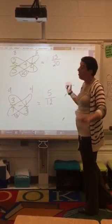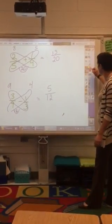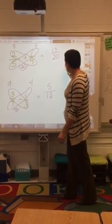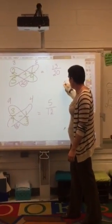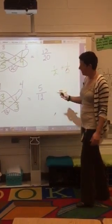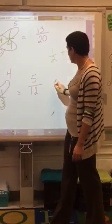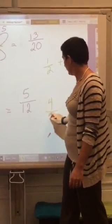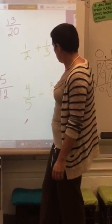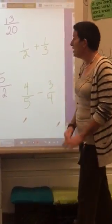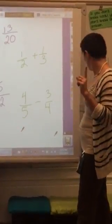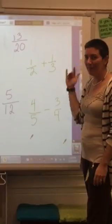All right, guys. For you at home, here's your extra credit due. First thing when you come in on Wednesday, I would like for you to add 1 half plus 1 third. And then I would like for you to subtract 4 fifths minus 3 fourths. On loose leaf with your name for extra credit on Wednesday. Have fun tomorrow. Don't forget your homework. And we will see you bright and early. Bye.